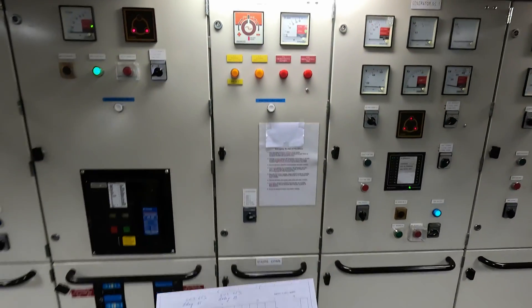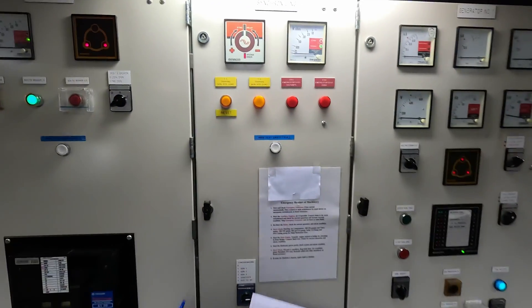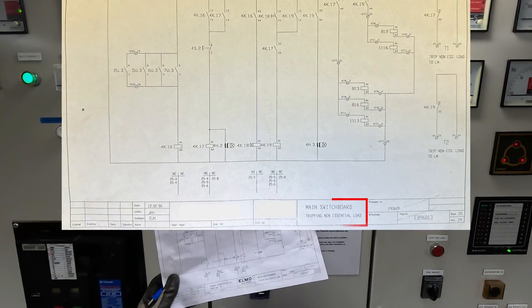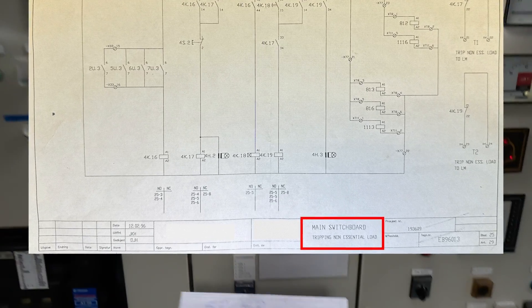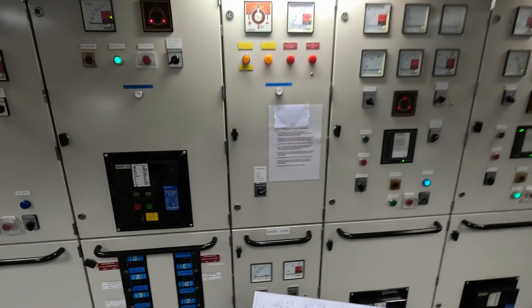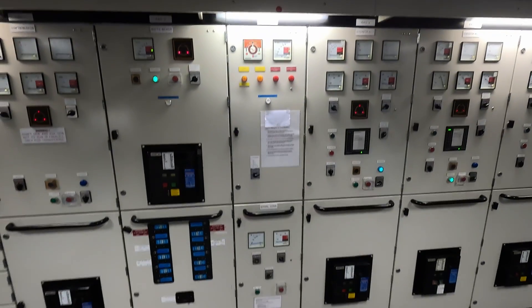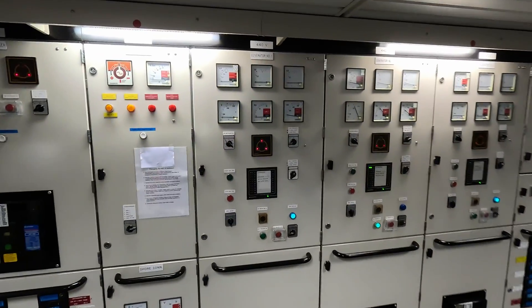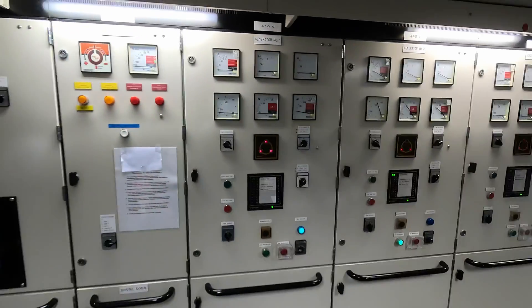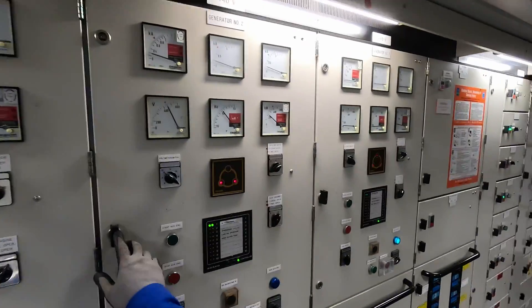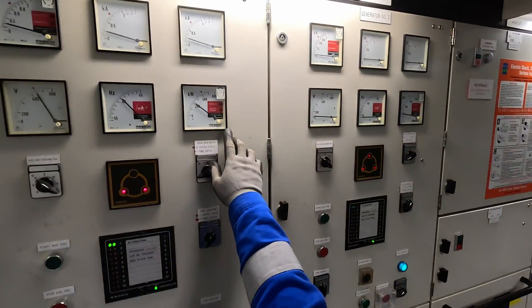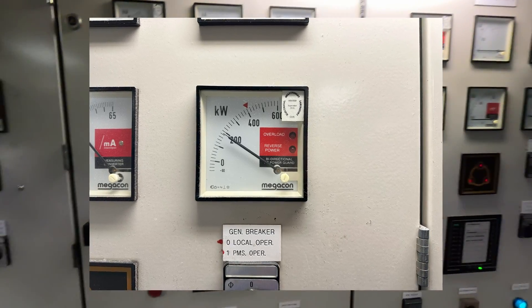Today we will try to simulate trapping of non-essential loads T1 and T2 according to this one-page drawing. We will have basic schematics reading and how to simulate this overload trip. Basically, we will use generator number 2, device overload, and reverse power combination relay.